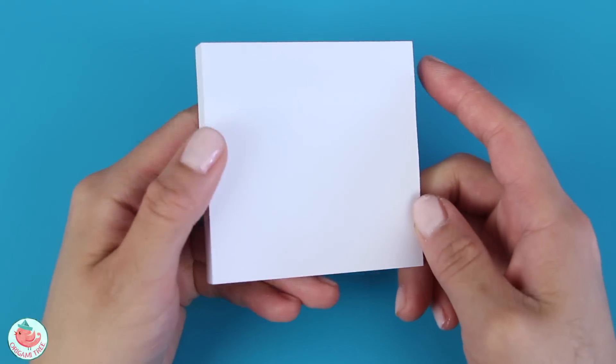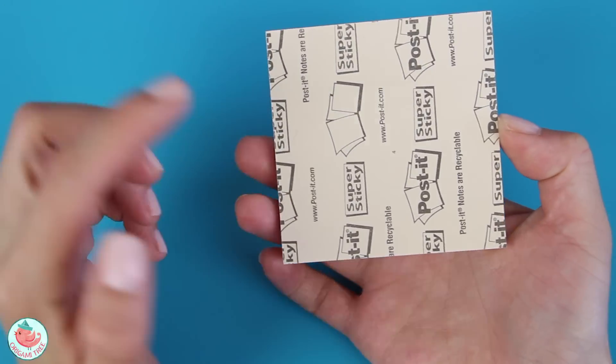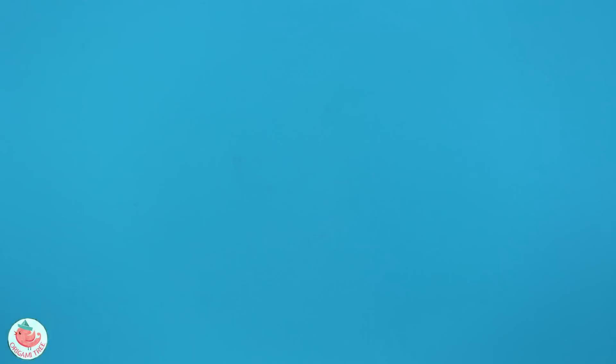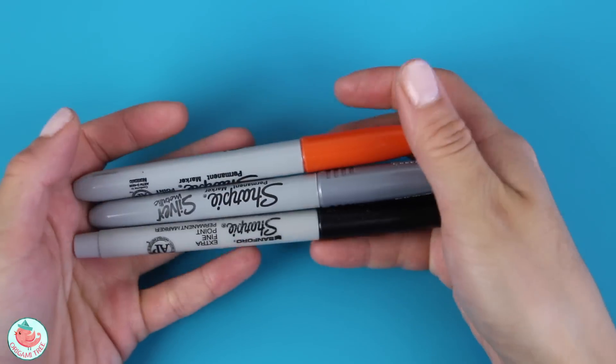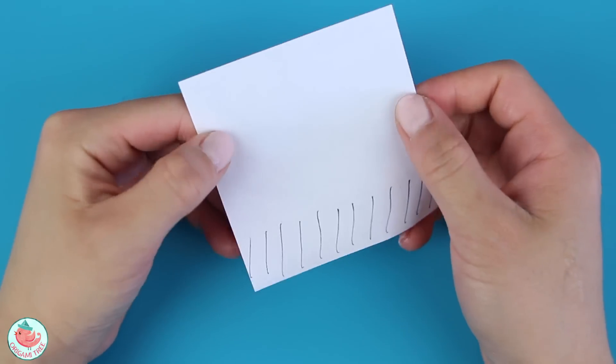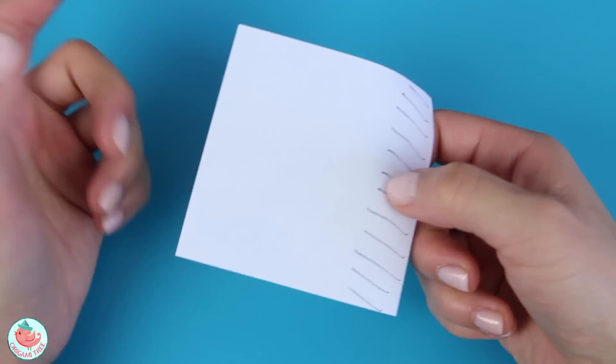To make a post-it note BB-8 Bookmark, you're going to need a white post-it note. So this is a post-it super sticky note. You also need some crayons and some markers to draw in the features of BB-8. So I've highlighted the adhesive part so it's easier to see on camera.